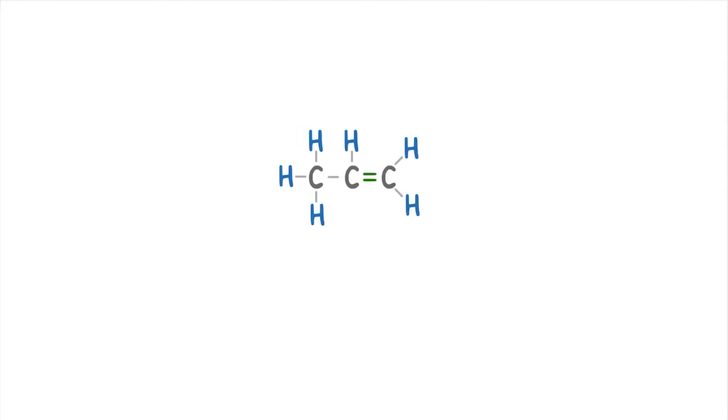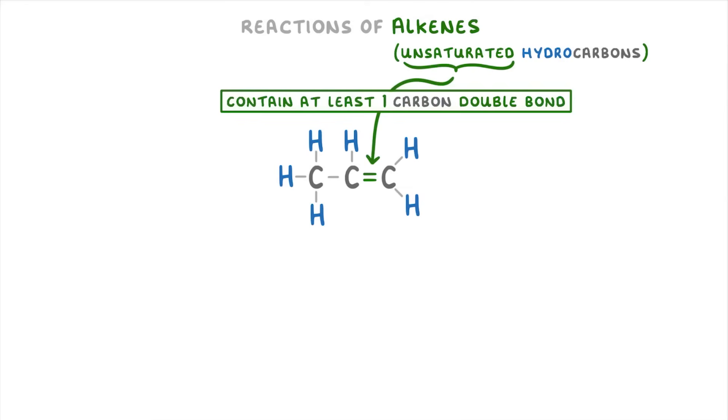In today's video we're going to look at the reactions of alkenes, which we can class as unsaturated hydrocarbons. The unsaturated part means that they contain at least one carbon-carbon double bond, which is their functional group.